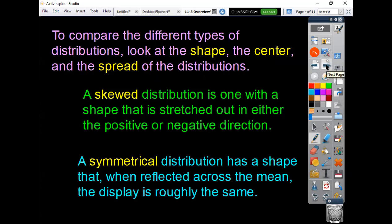All right. So then we have some shape, center, and spread. Hopefully you've heard of these terms before. The shape is that normal or skewed left or skewed right type of shape of the graph. The center is mean, median, mode. Those three.